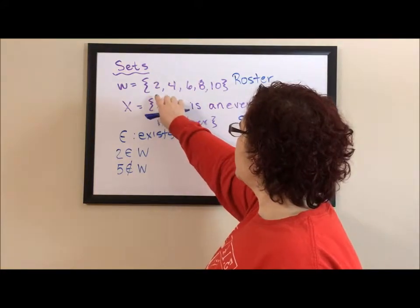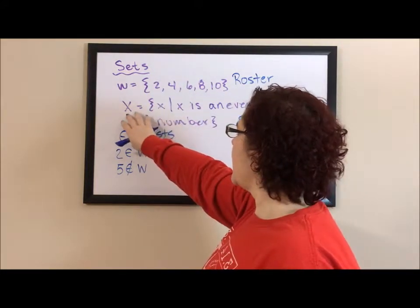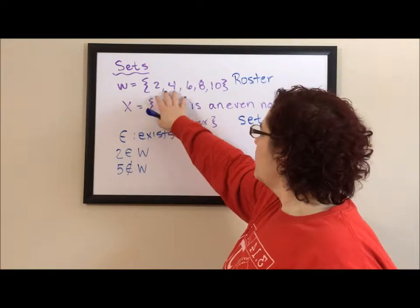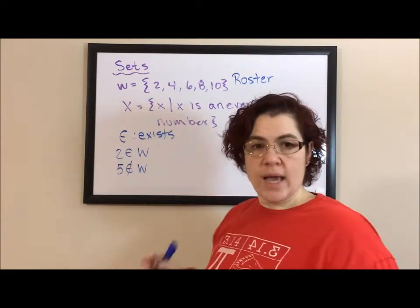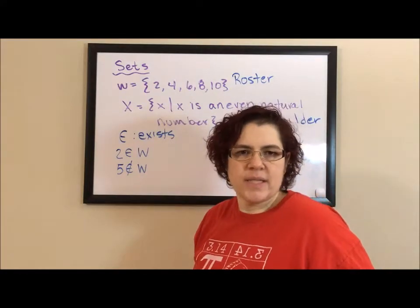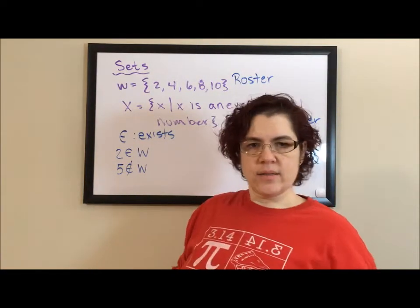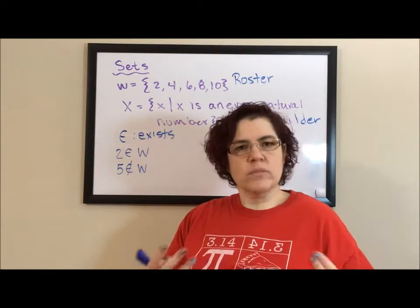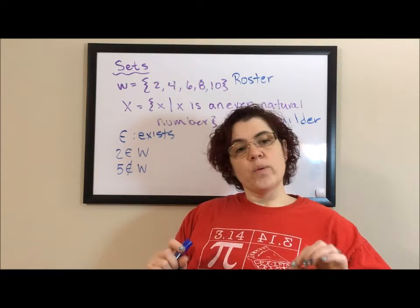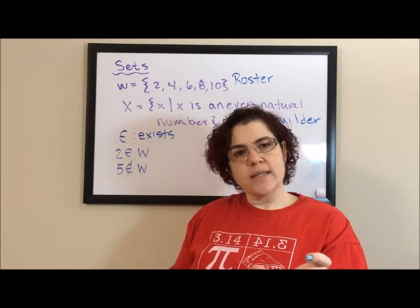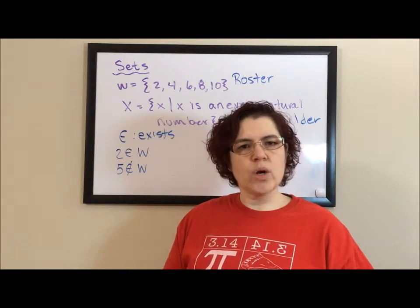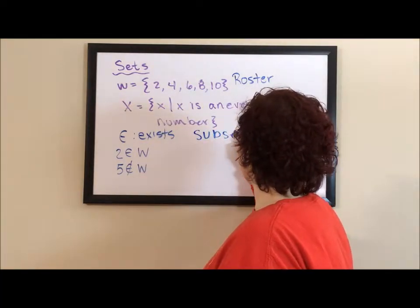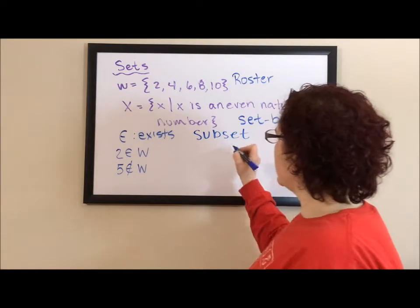Now if you look at this set, 2, 4, 6, 8, 10, and set X, which is all positive even numbers, you'll notice that all of the elements in W are also in X. So our inclination is to be able to say the full set W exists in the full set X. The problem is exist E works with elements E, nicely put together. When we want to talk about sets that are part of other sets, we actually use something called a subset.